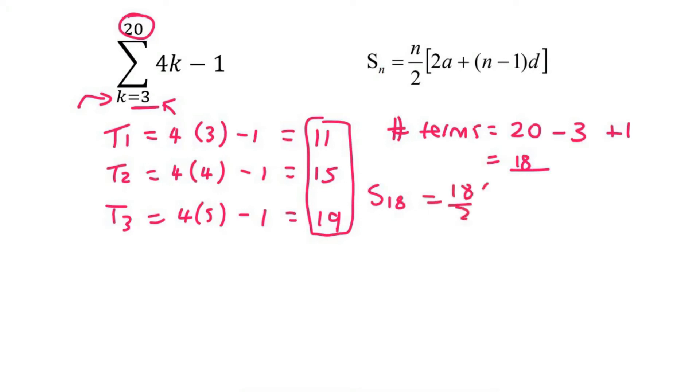So we're going to say 18 over two. Then A is term one, which is 11. N is 18. We don't use that 20 at all in the calculation.